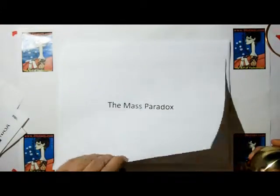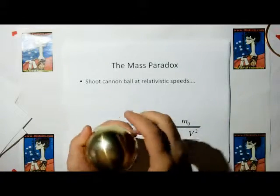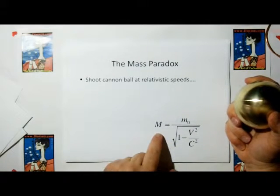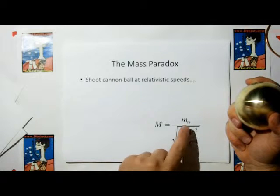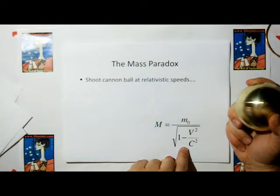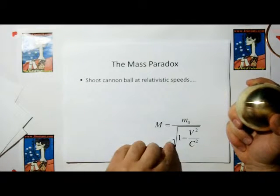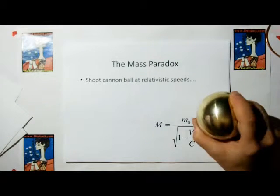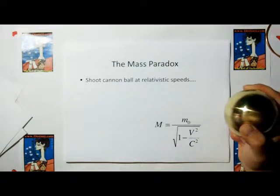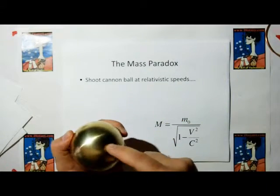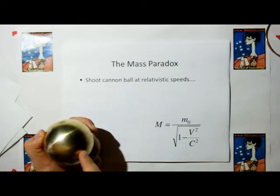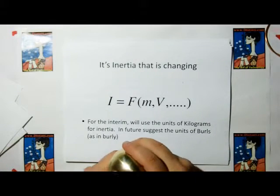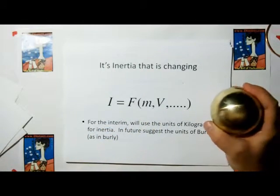So where does the mass paradox come in? If we take this brass cannonball and shoot it near the speed of light, according to Einstein's relativity, its mass is going to increase by the Lorentz transform factor. But that's confusing — if mass is the quantity of atoms, of copper and zinc atoms in the cannonball, then what happens? Are there more zinc and copper atoms being formed as this thing travels at the speed of light? No, that can't be. That's ridiculous. So what we truly have here is not a case of mass changing — it's a case of inertia changing.